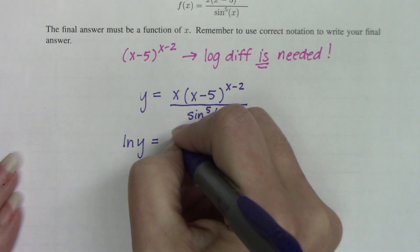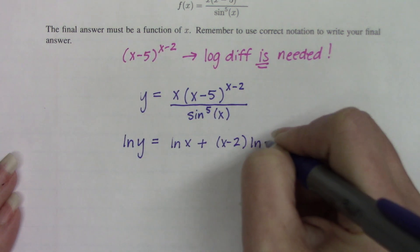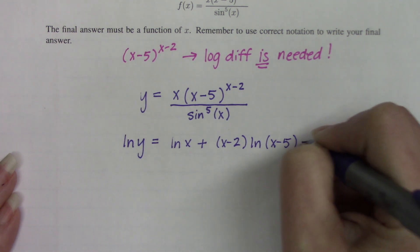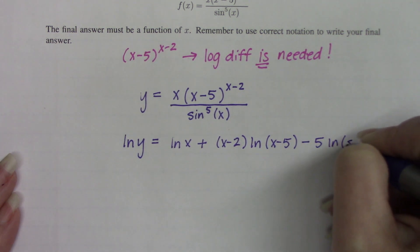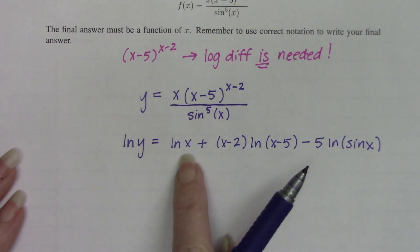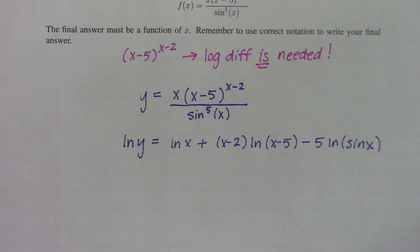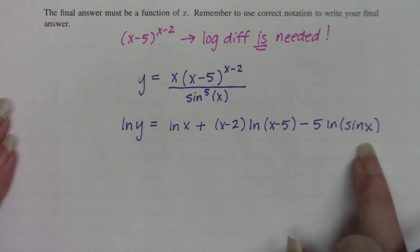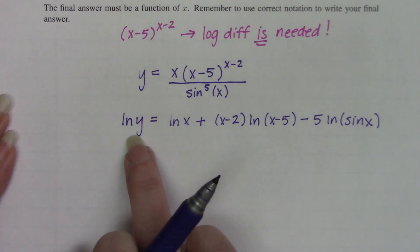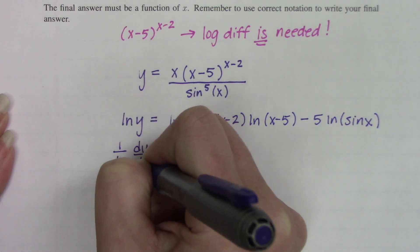When we expand it, we get the natural log of x plus x minus 2 times the natural log of x minus 5, minus 5 times the natural log of sine of x. If you can't see how taking the natural log of the original gives you this expansion, that resource I just mentioned will be helpful. Now that we're here, let's take the derivative. We've created an implicit function, so on the left side we have to do implicit differentiation — that's 1 over y times dy/dx.